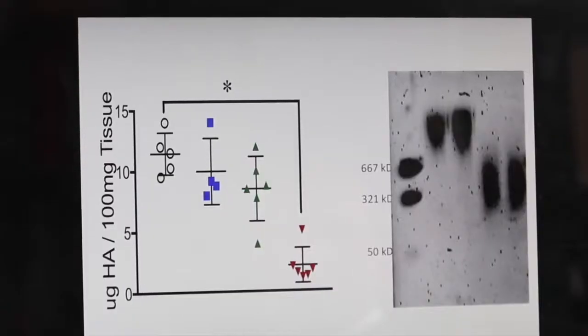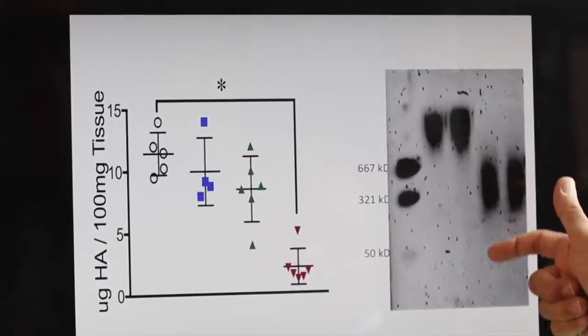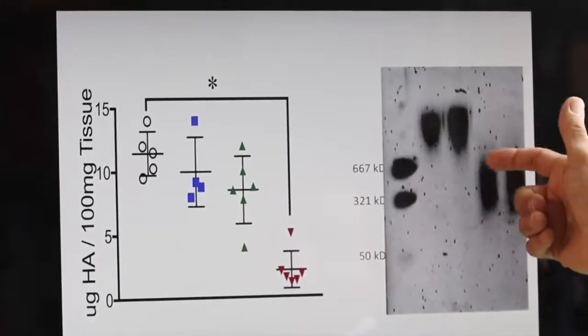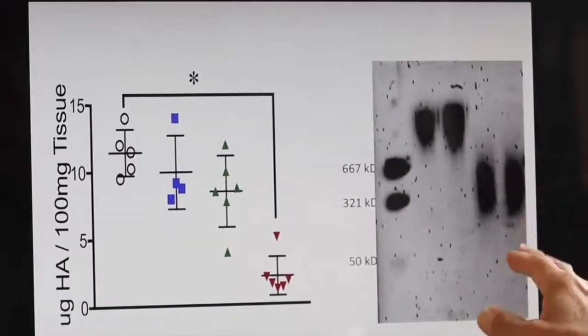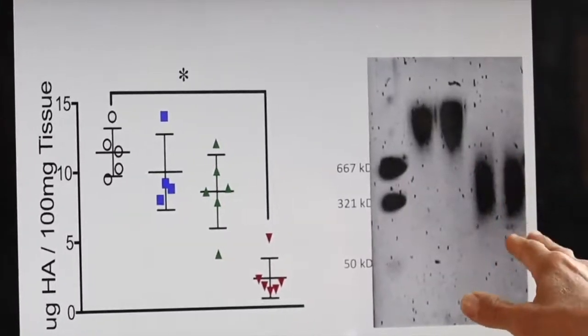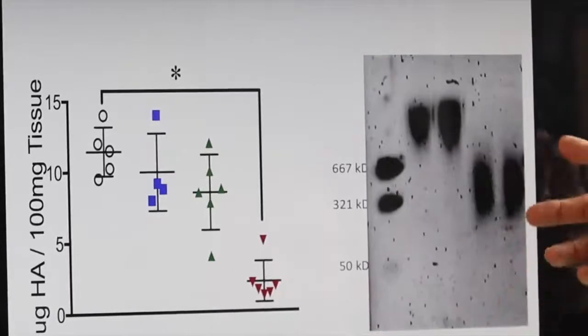And indeed what we found was that the brain lysates would generate a broad range of fragment sizes, ranging roughly from about 150 to 600 kilodaltons. And so this gave us a clue that there was, within that kind of mixture of sizes, a potential bioactive fragment that might be inhibitory to remyelination after injury.